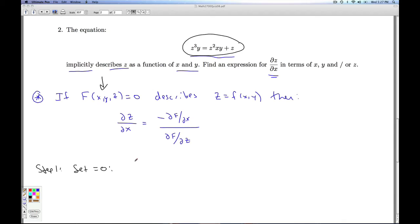Get the equation equal to 0. And there's a couple different ways to do that. I'm going to have z cubed y minus z squared x y minus z equals 0. So this will be my function F(x, y, z).